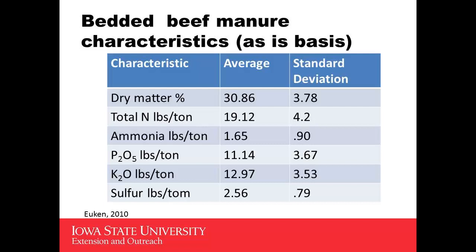This is Russ's data showing the average over all 82 samples on an as-is basis, which includes moisture. Total nitrogen averaged about 19.12 pounds per ton of manure. P2O5 was a little over 11 pounds per ton, and K2O was at 12.97 — about 13 pounds per ton. You can see the standard deviations: the higher the standard deviation, the greater the variability in the samples.